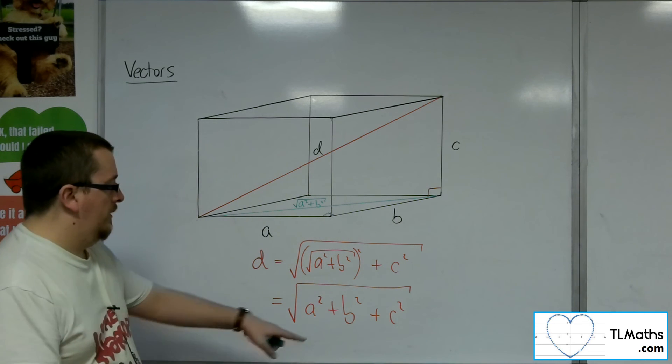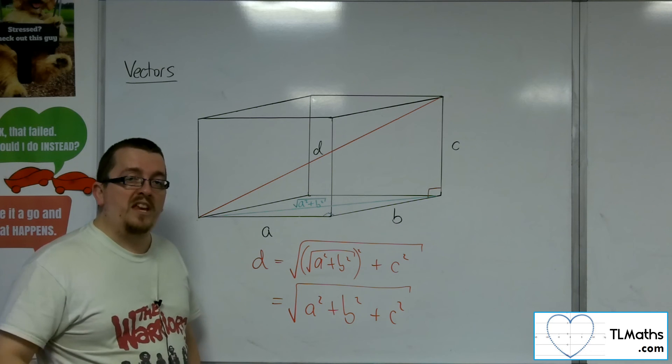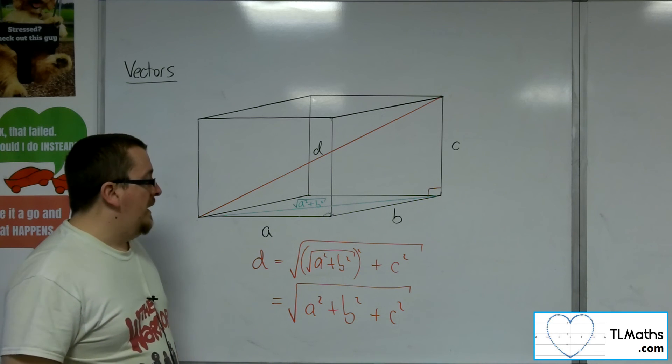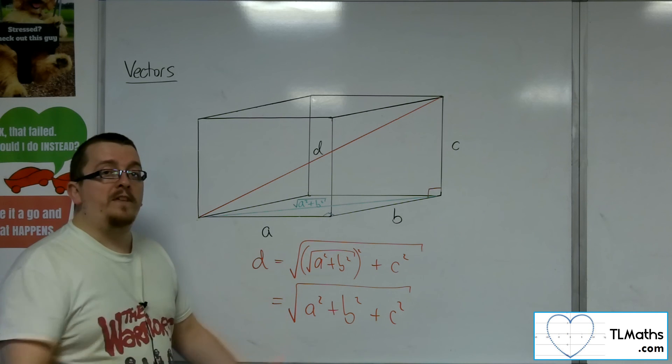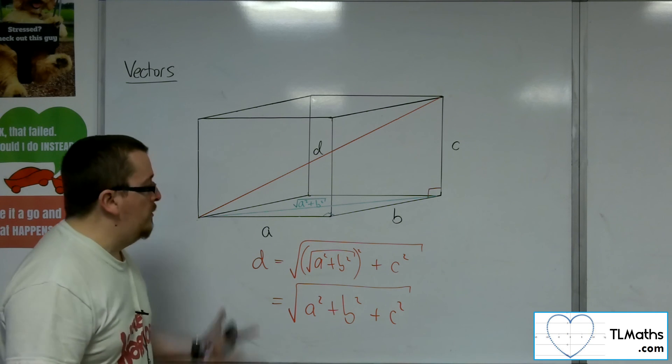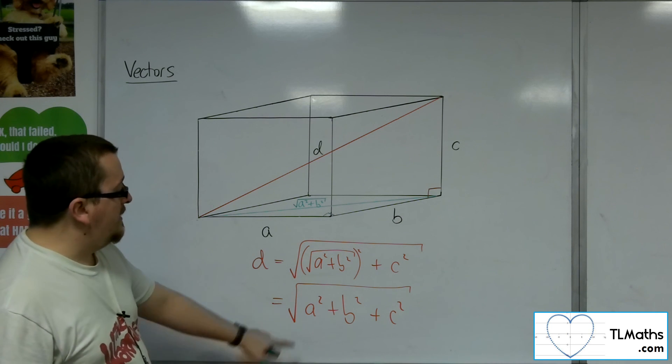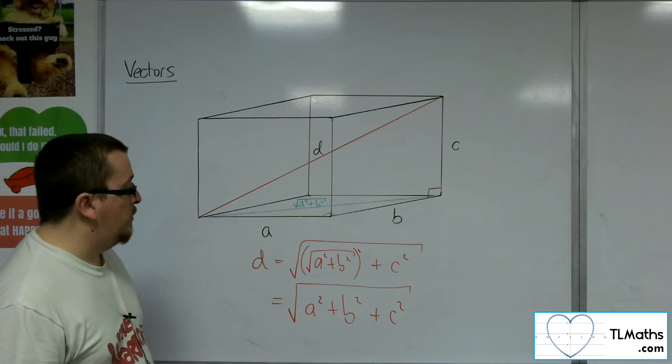So this is how Pythagoras works in three dimensions. It's actually quite a basic-looking extension to something you already know. So the length of a 3D vector is A squared plus B squared plus C squared.